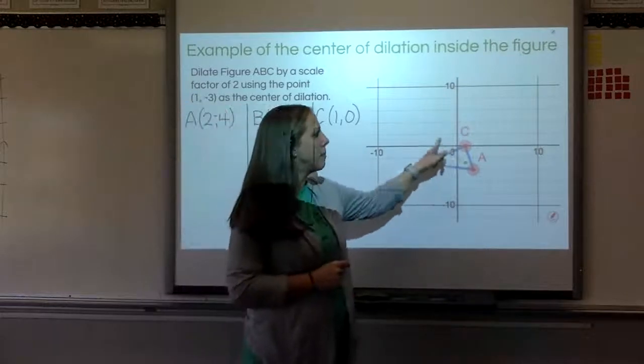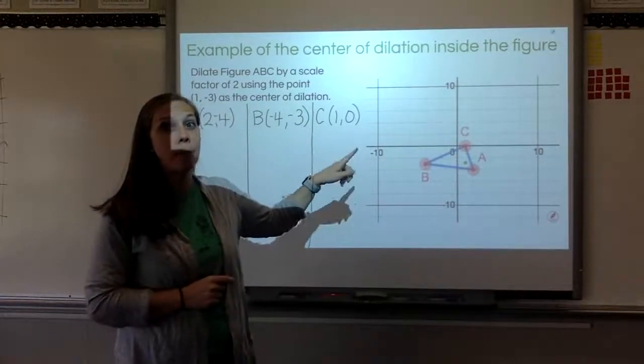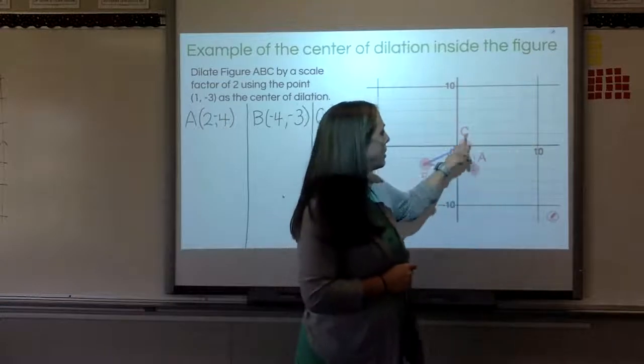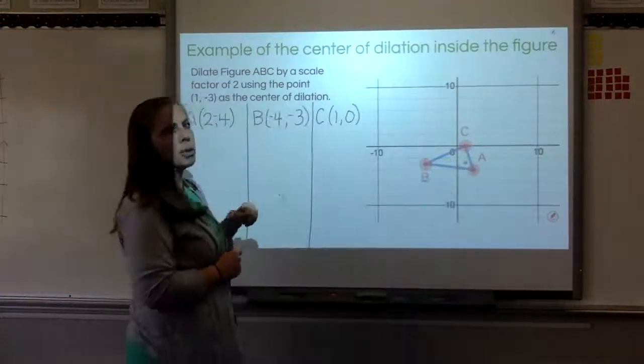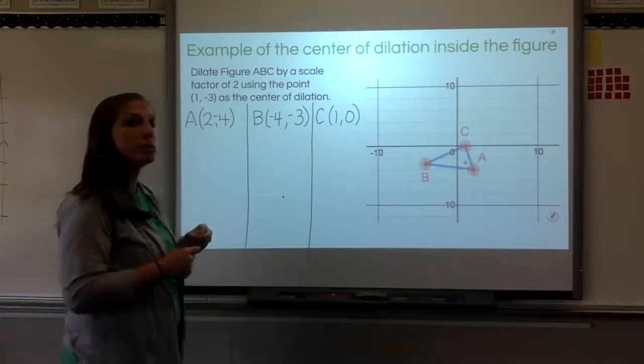You'll notice this time my grid lines are actually skipping by 2, so keep that in mind. I know this is 10 out here, so each of the lines will be 2, 4, 6, 8, and then 10. So be careful when you're counting your spots on this one.